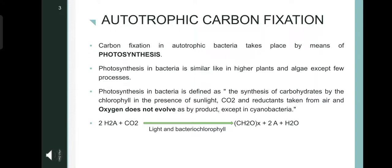Autotrophic carbon fixation. Carbon fixation in autotrophic bacteria takes place by means of photosynthesis. Photosynthesis in bacteria is similar to the higher plants and algae but except in few steps or processes. Photosynthesis in bacteria can be defined as the synthesis of carbohydrates by the bacteriochlorophyll in the presence of sunlight. Carbon dioxide and reductants taken from the air and oxygen is not evolved as a byproduct except in cyanobacteria.